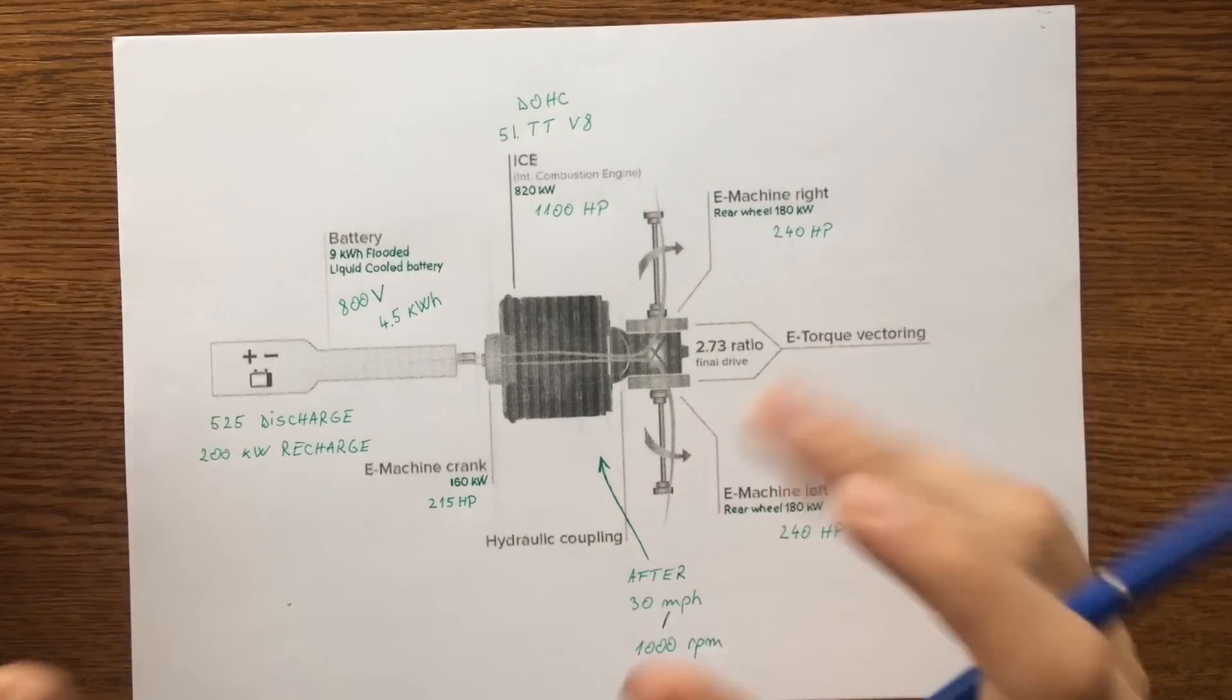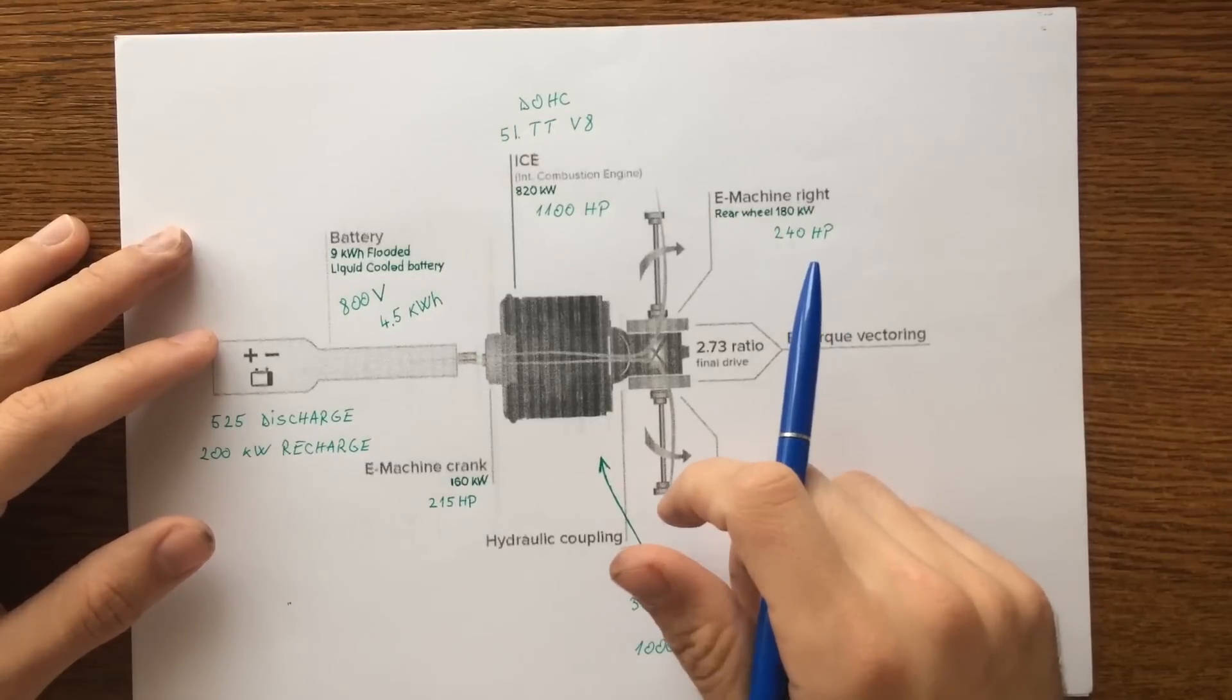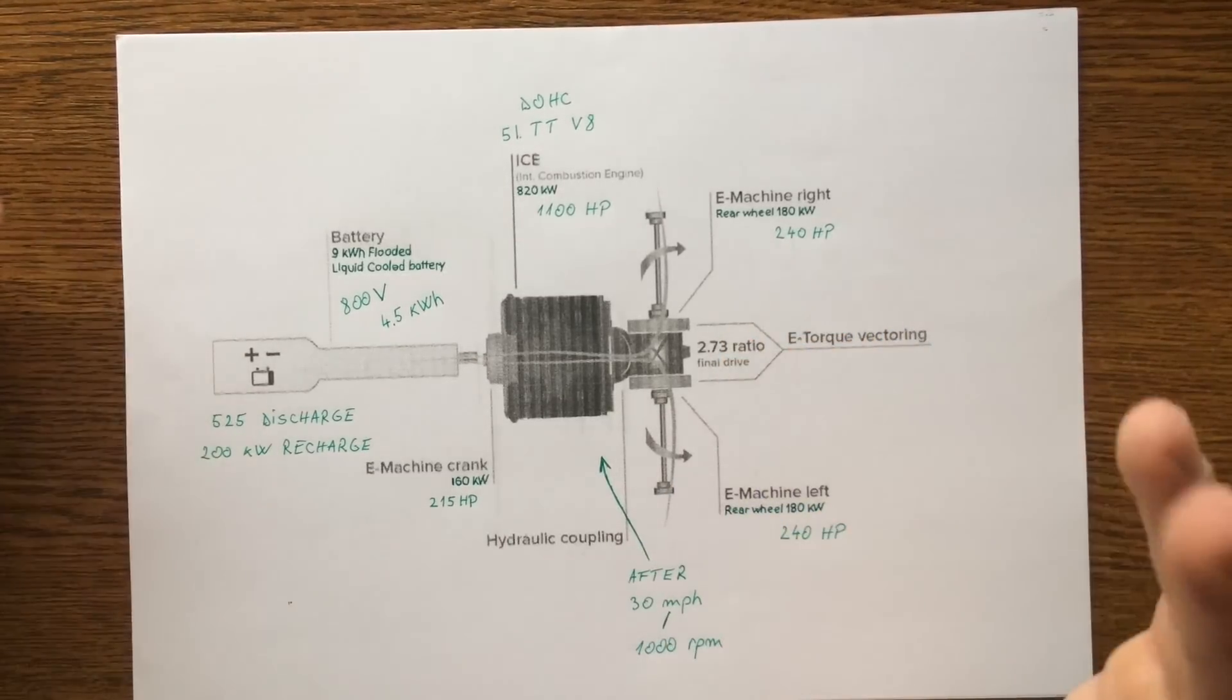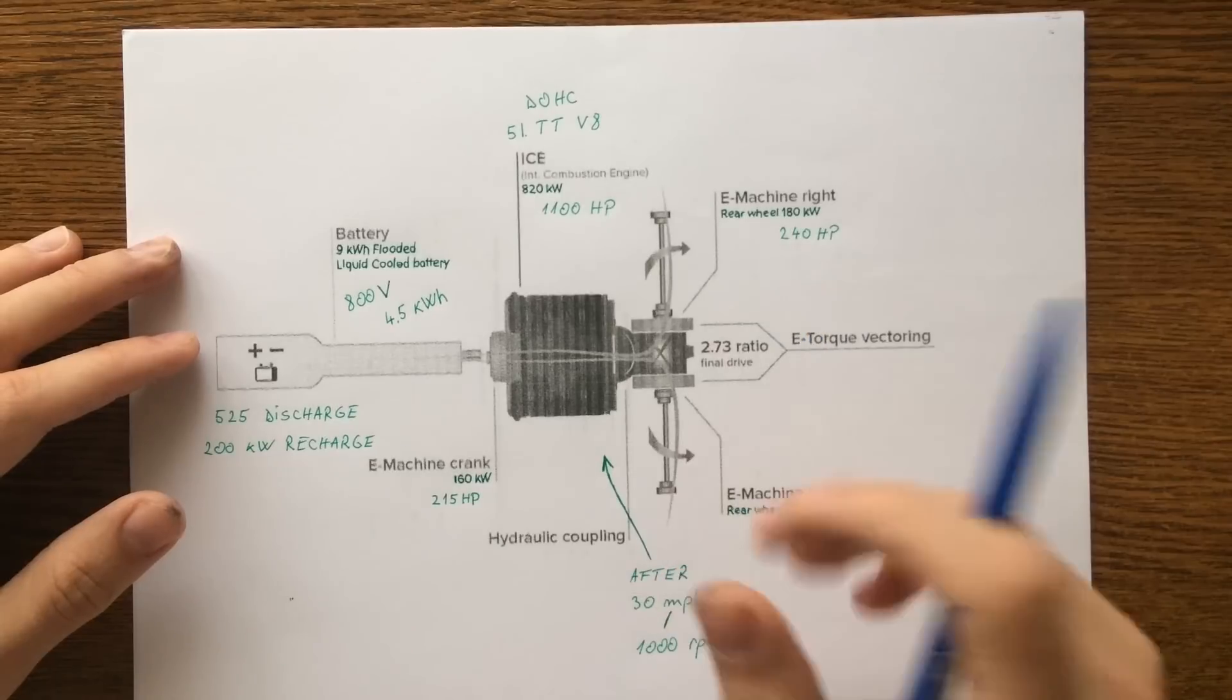The only batteries in any form of automotive use that provide comparative performance for the size are those found in Formula One race cars.